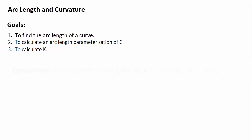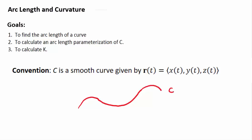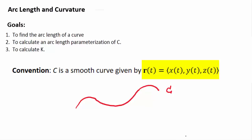The convention: C is a nice smooth curve given by R of T. Picture a nice curve in space or in the plane with no sharp edges — it might have slow turns but nothing sharp. C is going to look like that, given by some vector valued function R of T.